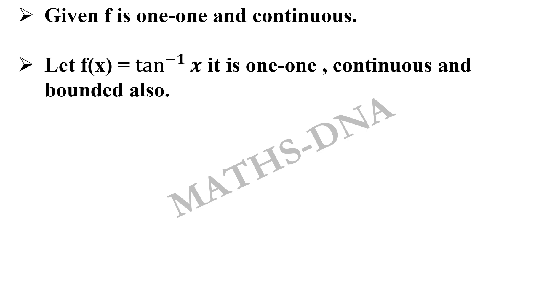Taking option D, option D says that the function is unbounded. But we have a function f(x) equals to tan inverse x which is one-one, continuous, and bounded. So option D which says that f is unbounded is incorrect.